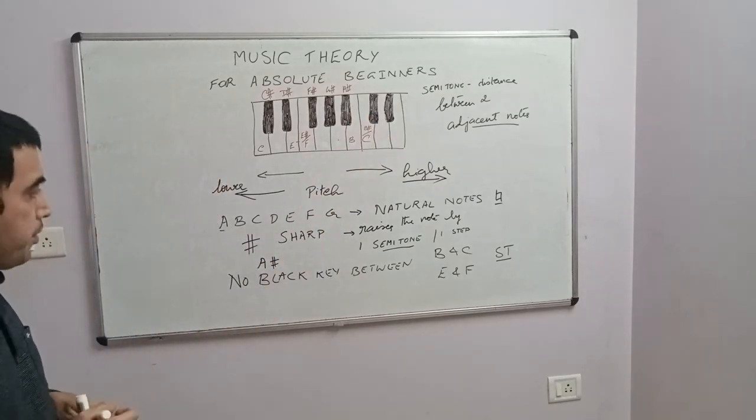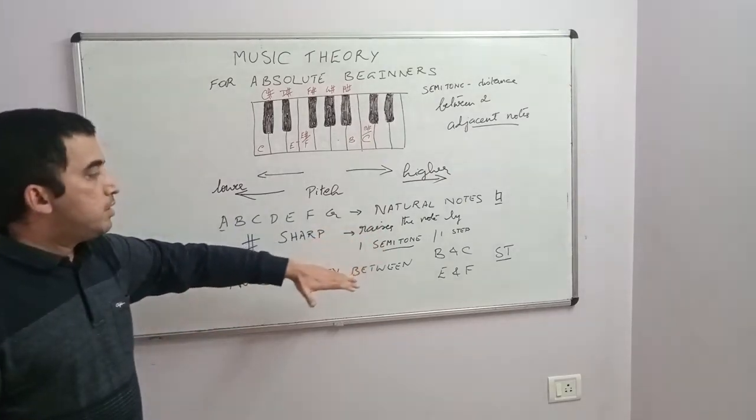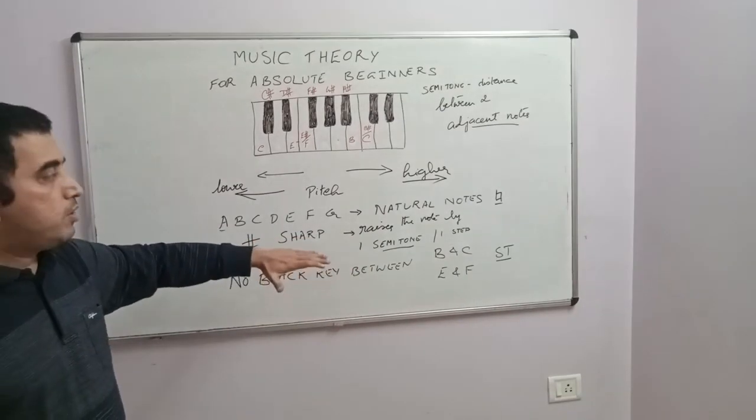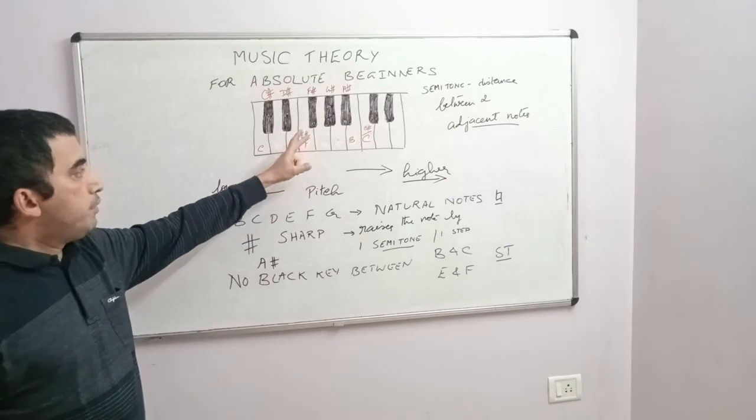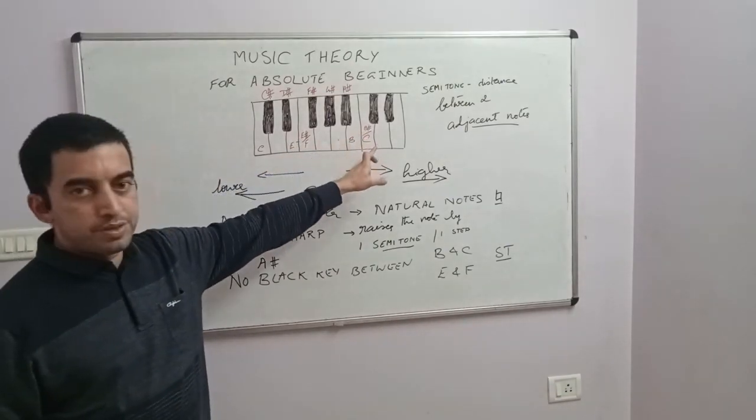So the general rule is: natural notes are white keys, sharps and flats are black keys. But it is not an absolute rule, because even though it is E sharp, it is a white key. B sharp is also a white key. The rest of them are black keys.